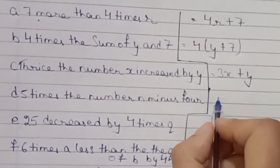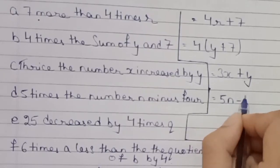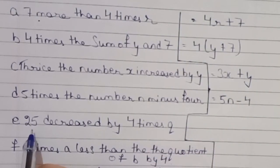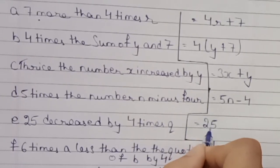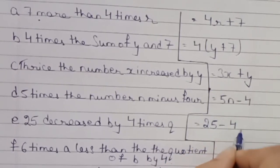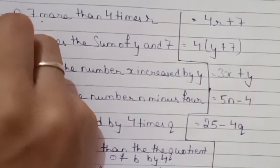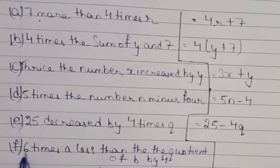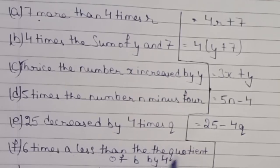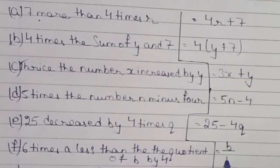D: 5 times the number n minus 4. So we will write the answer as 5n minus 4. E: 25 decreased by 4 times q. Decreased means minus, so: 25 minus 4q. F: Quotient of b by 4 — sorry, I wrote D twice — the answer is b by 4 minus 6, written as b/4 − 6.